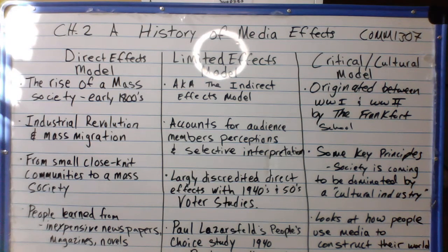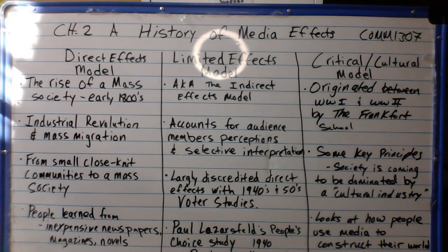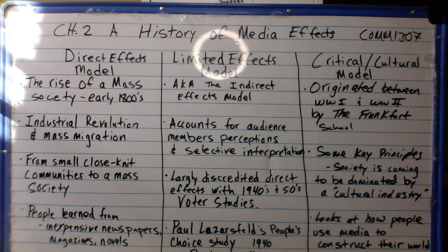There's another approach on the right hand side — the critical and cultural model. After the indirect effects approach, we're no longer just asking whether messages have an effect on individuals, but whether there is a broader societal, holistic, systematic approach to understanding media. Many scholars argue there is a way to look at it from a very holistic point of view, and that's what the critical cultural model gives us.